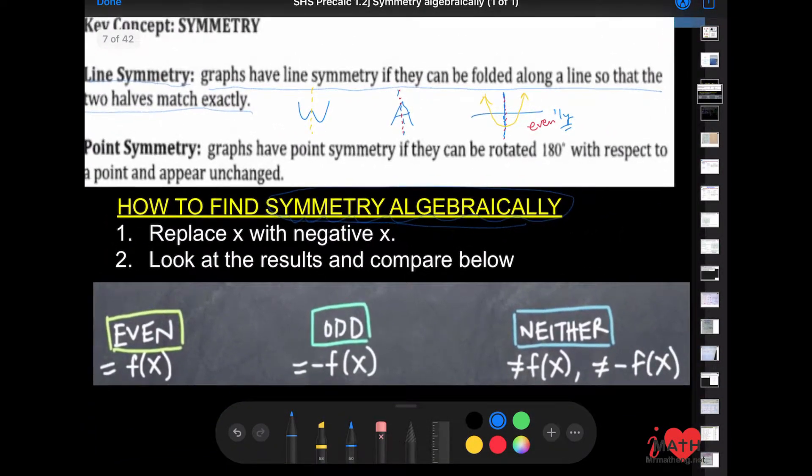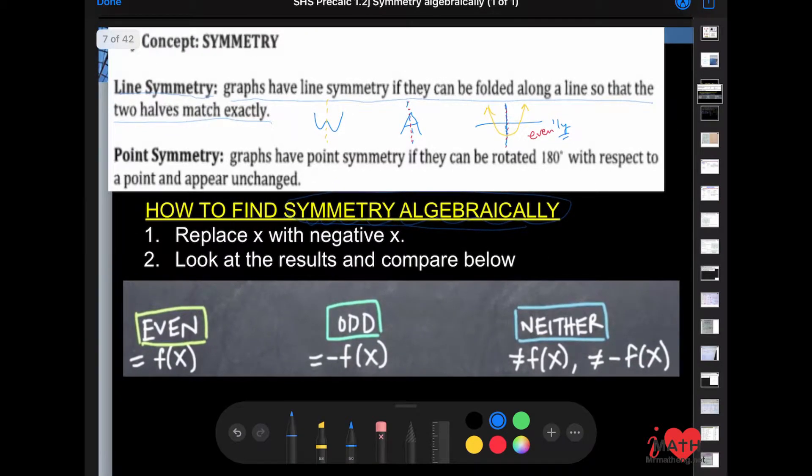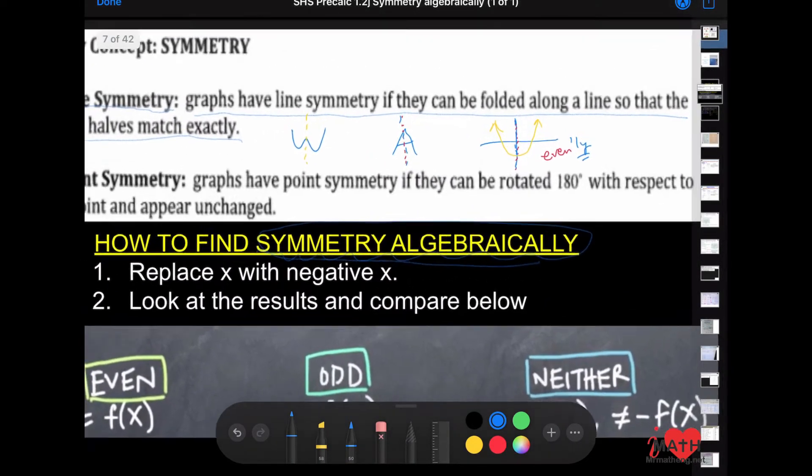We also talked about point symmetry. Graphs have point symmetry if they can be rotated 180 degrees with respect to a point and appear unchanged.